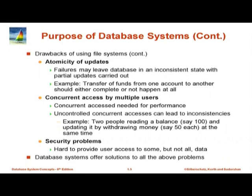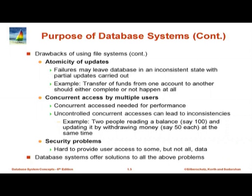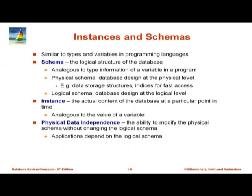The second part of what database systems do is deal with failures of different kinds — either because systems crash in the middle of processing, or because multiple people try to access data at the same time and bad things can happen when two people try to write the same data or read each other's data and cause inconsistencies. The two major issues are atomicity of updates, to ensure either a whole transaction happened or things are cleaned up so it appears nothing happened, and controlling concurrent access so that bad things don't happen. The third aspect is handling security by controlling access to data.